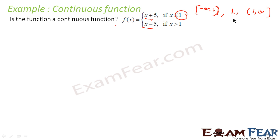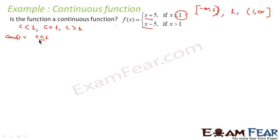That means we have three cases: c less than 1, c equal to 1, and c greater than 1. For Case 1, where c is less than 1, this function is a polynomial function and I know it is continuous — a polynomial function is always continuous. So this is continuous in this range.